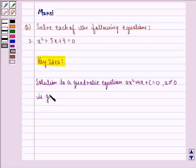...is given by x equal to minus b plus minus under the root b squared minus 4ac, the whole divided by 2a.